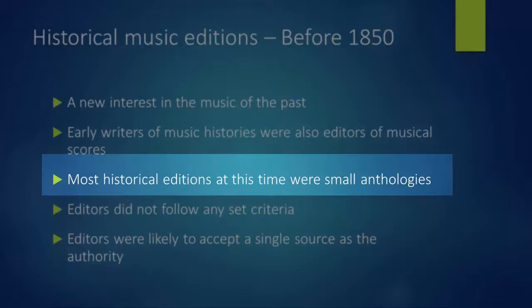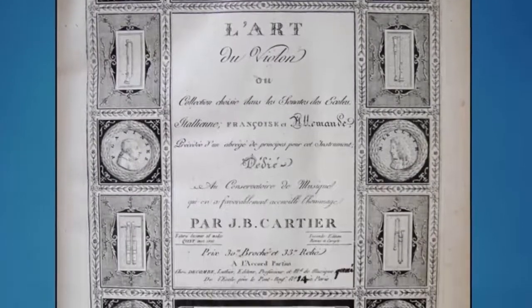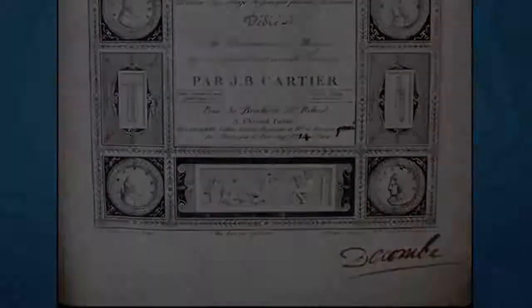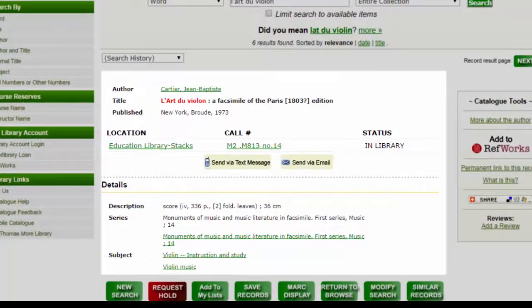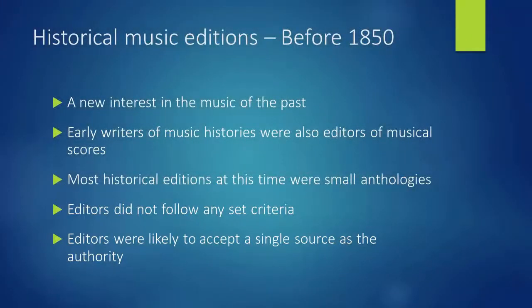Instrumental anthologies also began to appear around the turn of the century. One example is Cartier's L'Art du Violon, which was published in 1797. A copy of this work can be found in the Education and Music Library. At this time, editorial criteria did not really exist. Each editor followed their own judgment, which often meant that the editor's musical knowledge would take more prominence than the integrity of the primary source. Editors were likely to accept a single source as the authority and didn't usually compare sources. Some aspects of early notation had not yet been discovered, so these early historical editions are less useful today for their content, but more so as illustrations of the history of music scholarship.